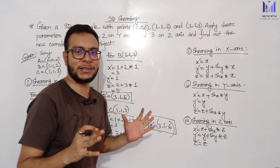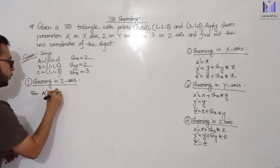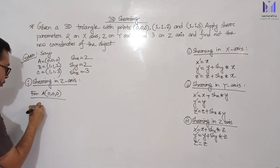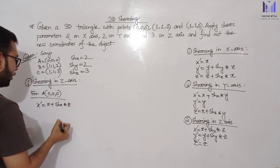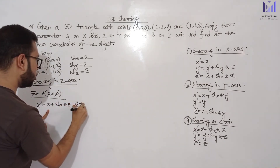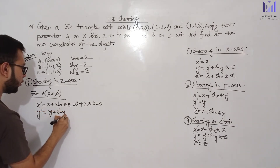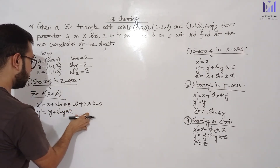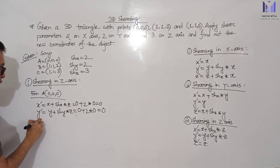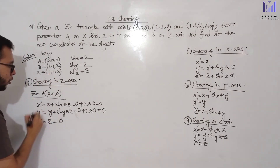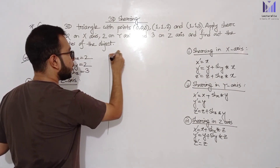Now shearing in Z-axis. For point A (0, 0, 0): X prime equals X plus shearing parameter X multiplied with Z — 0 plus 2 multiplied with 0 equals 0; Y prime equals Y plus shearing parameter Y multiplied with Z — 0 plus 2 multiplied with 0 equals 0; Z prime equals old Z value which is 0. So A prime is (0, 0, 0).